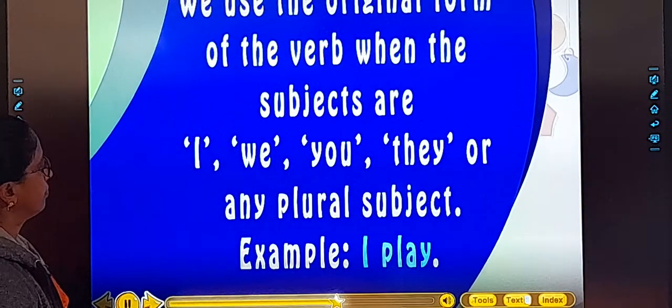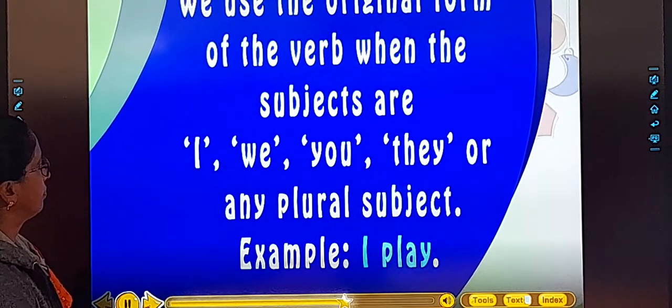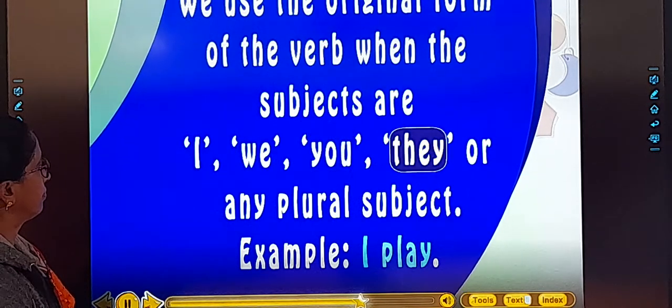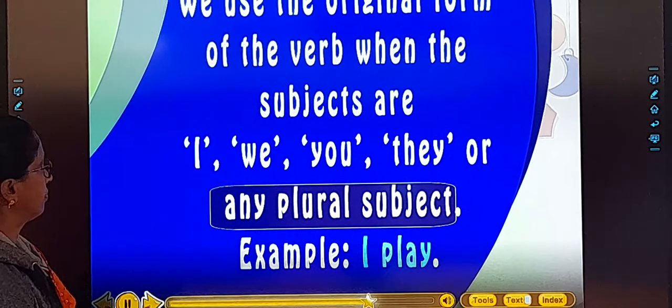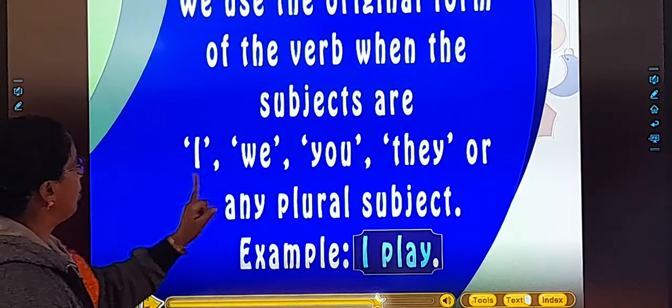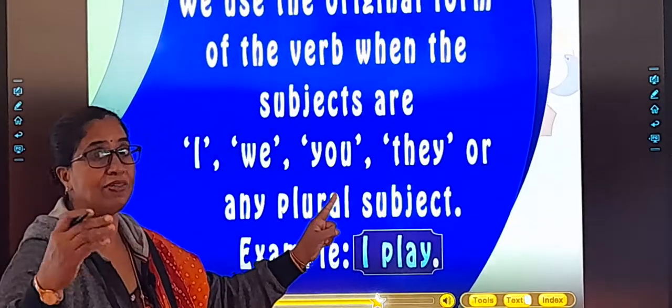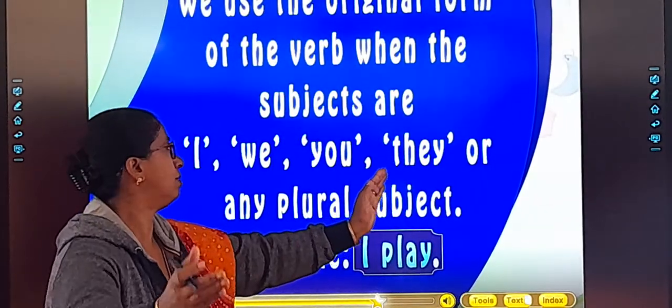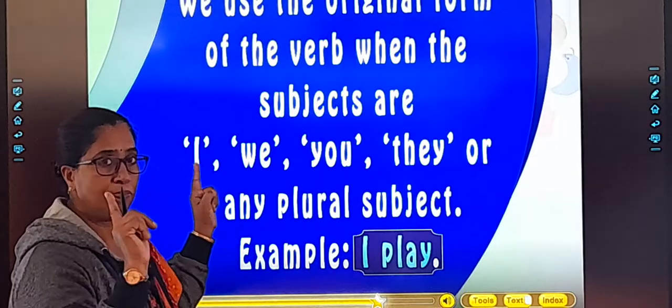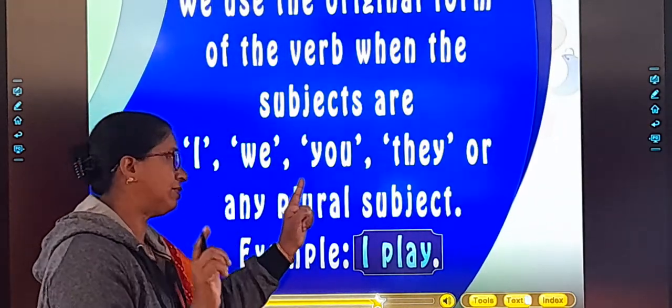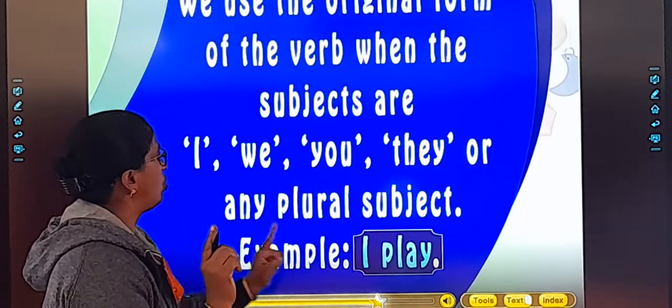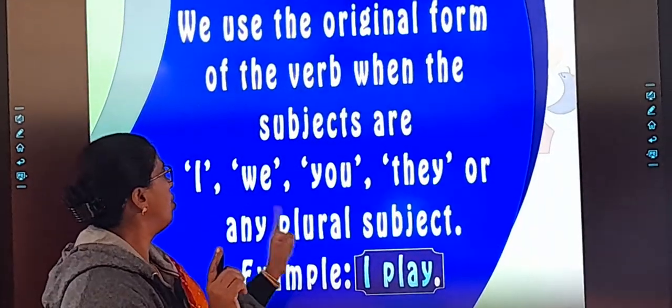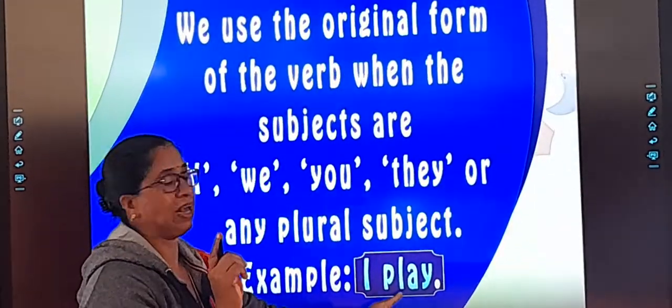We use the original form of the verb where the subjects are I, we, you, they, or any plural subject. So with plural subject, plural is more than one - we, I and my friend, they, plural. But there is an exception: I is not plural, you is not plural, but with I and you also, we use the original form of verb. Plural and with I and you, you have to use original verb form, plain.